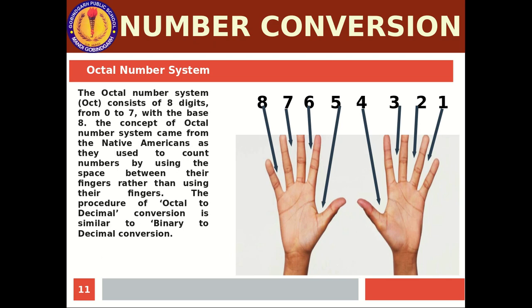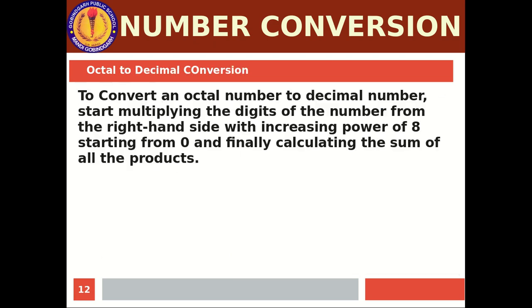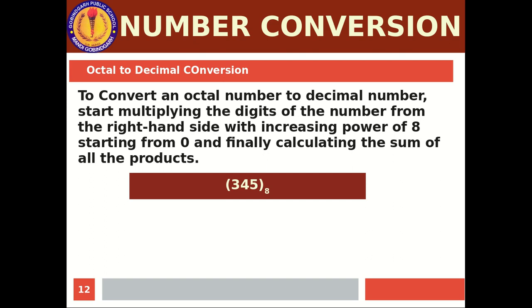The procedure for octal to decimal conversion is similar to binary to decimal conversion. To convert an octal number to decimal, start multiplying the digits from the right hand side with increasing powers of 8 starting from 0, and then calculate the sum of all the products. Let's try 345 — that is an octal number. All individual digits lie between 0 to 7 only. If any digit exceeds 7, it is not a valid octal number.